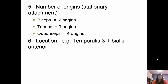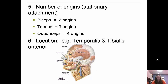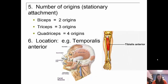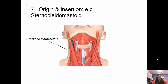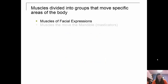Muscles can be named by the number of origins: biceps has two origins, triceps has three, quadriceps has four. They can be named by location — for example, the temporalis is by your temporal lobe, and the tibialis anterior is on the front of your tibia. And they can be named by their origin and insertion, like the sternocleidomastoid muscle — sternum, clavicle, and mastoid process.